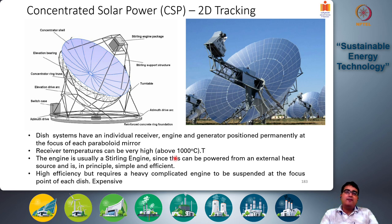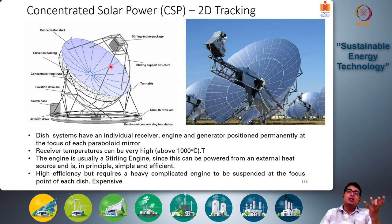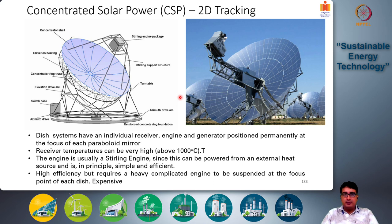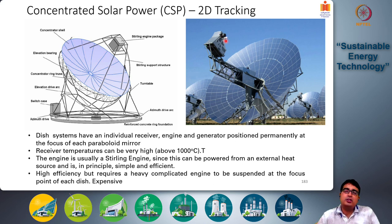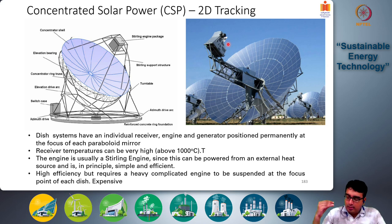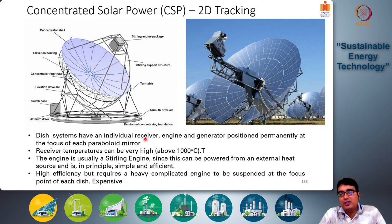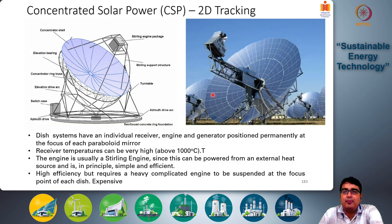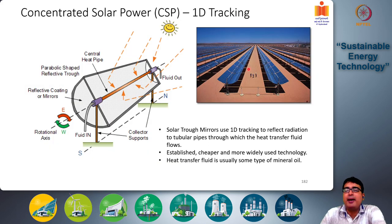In contrast, another option is the dish-type mirror, very similar to a satellite dish antenna but entirely made of mirrors. This type of system concentrates solar rays onto a section that contains its own individual engine and generator — the entire power generation unit is suspended at that point. The dish-type system has an individual receiver, engine, and generator positioned permanently at the focus of each paraboloid mirror. These are called paraboloid mirrors — 3D parabolic shapes — whereas the earlier ones were 2D parabolic shapes.